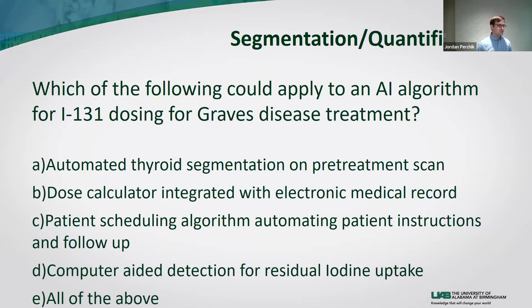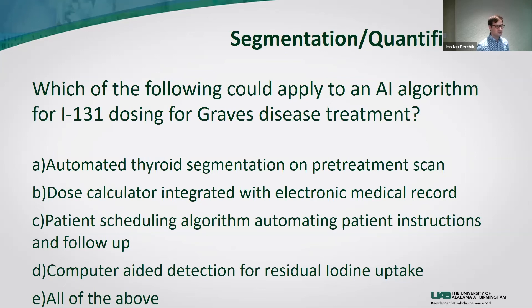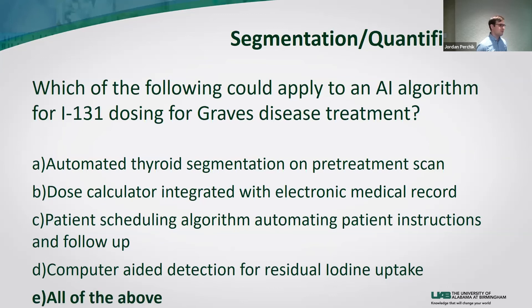Final question: Which of the following could apply to an AI algorithm for I-131 dosing for Graves' disease? A) automated thyroid segmentation on the pre-treatment scan, B) a dose calculator integrated with the electronic medical record, C) patient scheduling algorithm for automating patient instructions and follow-up exams, D) computer-aided detection for residual iodine uptake, or E) all of the above. The answer is all of the above — if I took all the time to write all these answers, it's going to be all of the above.